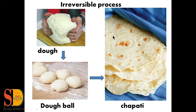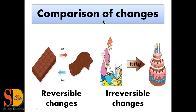Now we have a yummy comparison of reversible and irreversible change. We have a chocolate — when we heat this chocolate, it completely changes into liquid form, and when we cool it, our chocolate comes back. So that is a reversible change. But when we mix this chocolate with sugar, milk, flour, and some more ingredients and bake it, then we have a yummy cake. Can we get our ingredients back from this cake? No — this is an irreversible change. We cannot get our raw materials back from cooked or baked food.